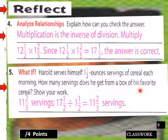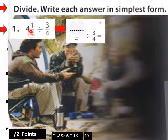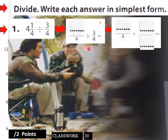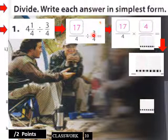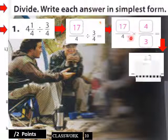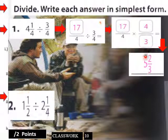Now show your work — write each answer in simplest form. Problem: four and a quarter divided by three-fourths. Four times four is sixteen, plus one is seventeen, so that's seventeen fourths divided by three over four. Invert and multiply: seventeen fourths times four-thirds. Four times seventeen over twelve — sixty-eight over twelve — simplifies to five and two-thirds.